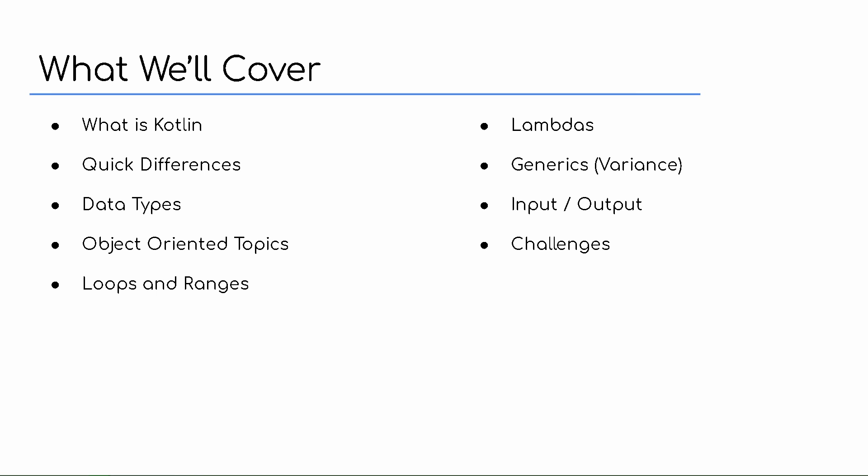So let's go over what you're going to cover in this course. First, I'll tell you a bit about the Kotlin language and then we're going to go over some quick differences between Kotlin and Java. For example, you don't have to use semicolons at the end of statements in Kotlin. We'll also code the classic hello world application, and that simple application will allow me to point out a few key differences between Kotlin and Java.